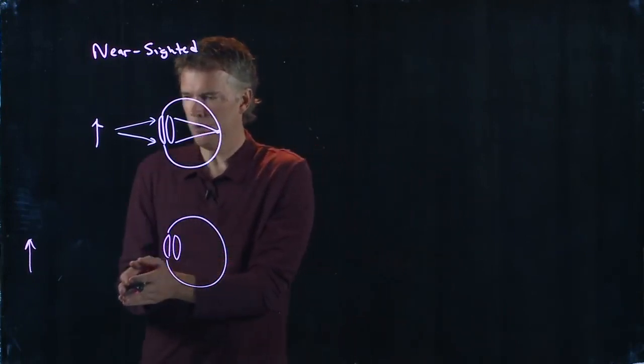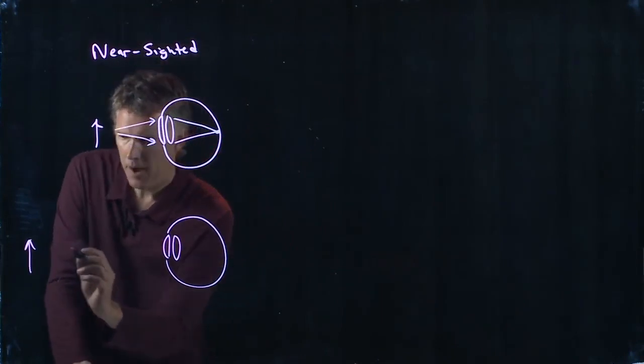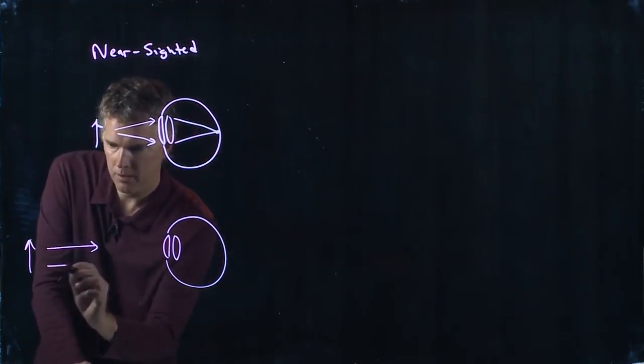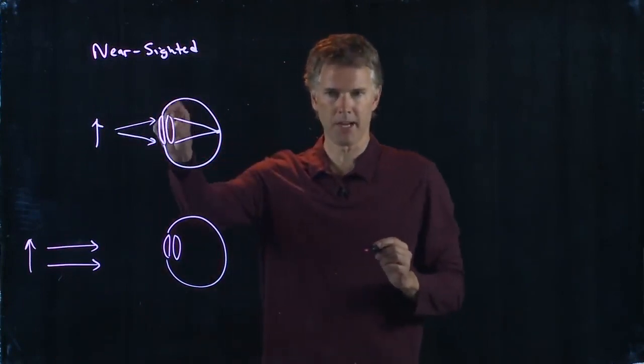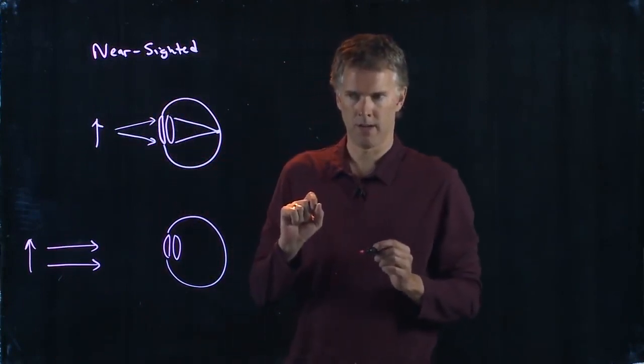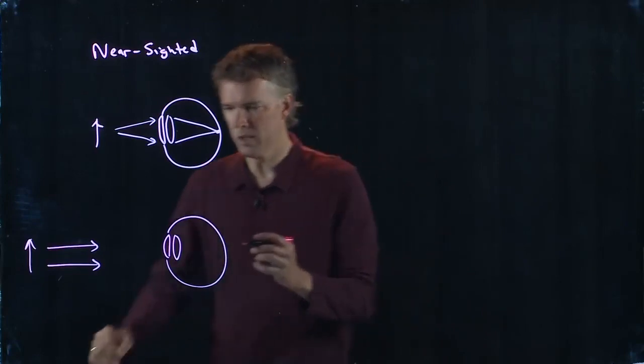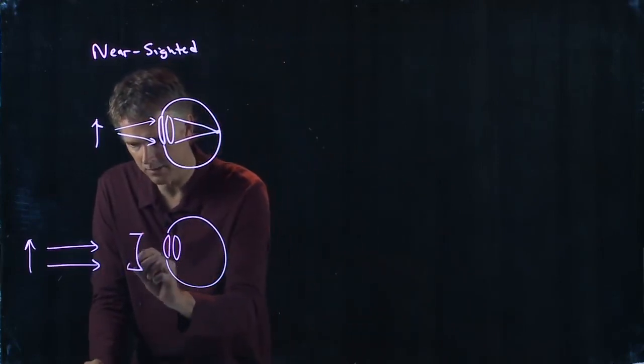So all we have to do is take parallel rays from this object and make them diverge. And we know how to do that, right? We use a diverging lens.